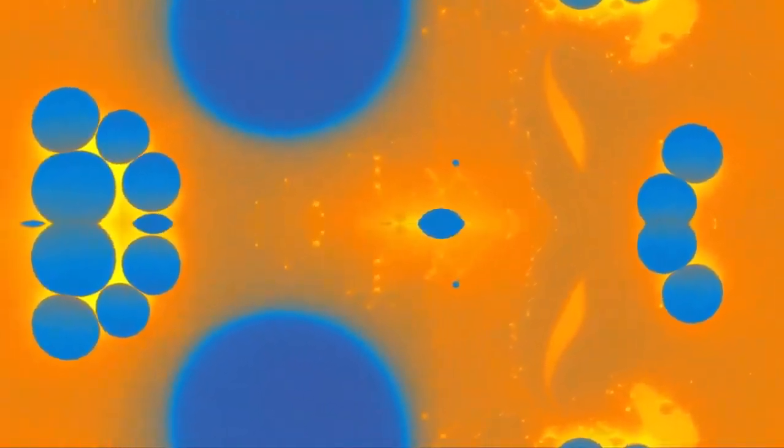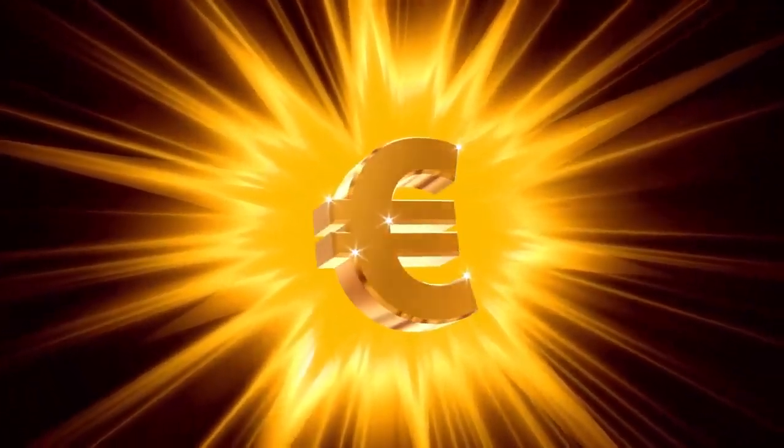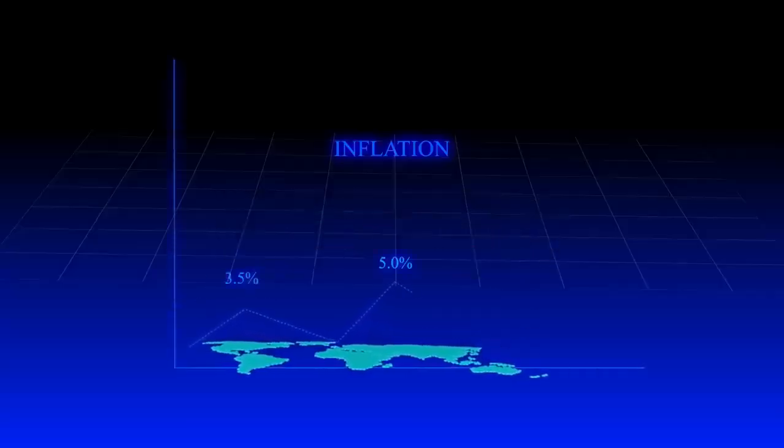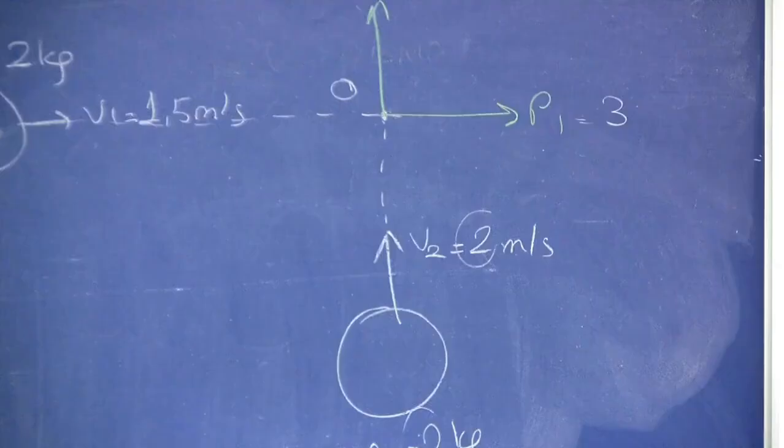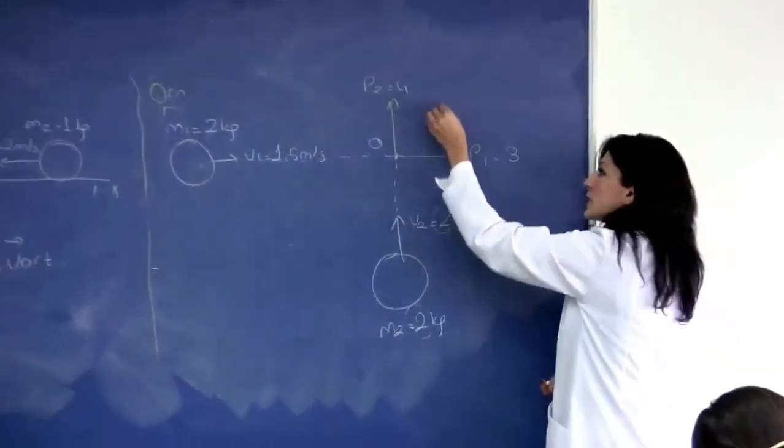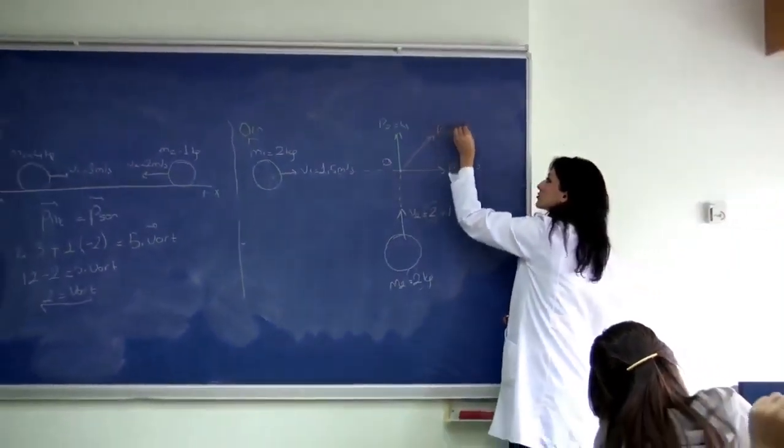Despite its appeal, eternal inflation has limitations. It's eternal only into the future, not into the past. In fact, it's been demonstrated that inflationary space-time doesn't extend into the past infinitely and must have originated from a prior non-inflationary and possibly singular state. The issue of past time-like incompleteness can't be avoided by considering alternatives like bouncing cosmologies or cyclic cosmologies, as they face similar challenges. However, this doesn't necessarily imply that the universe originated from a singularity.